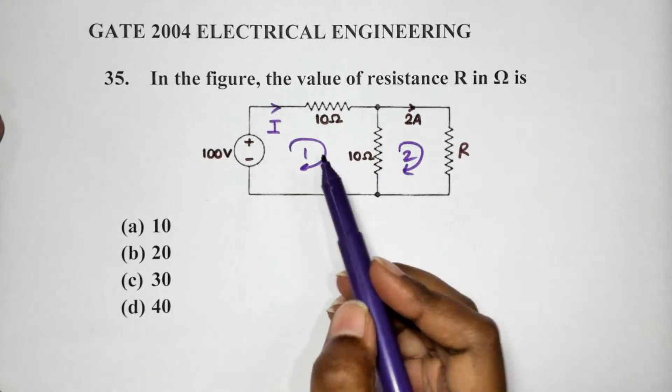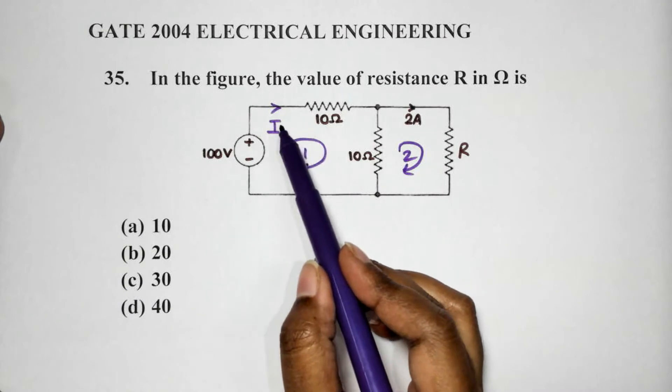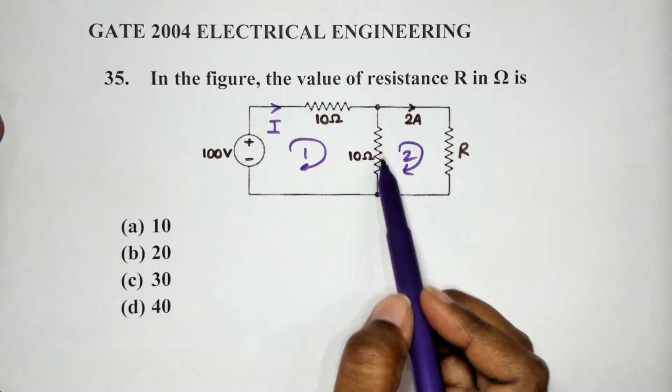And let's call the current that is passing through the resistor 10 ohms is I. Now, we need this because we will have to calculate the current that is passing through this 10 ohm resistor, both the sides.